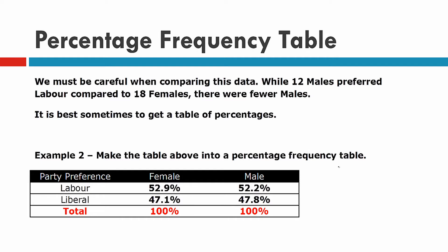Here we're going to convert it to a percentage table, and we're aiming for 52.9%. Looking at females, there were 18 females who preferred Labour out of 34 females. To change something to a percentage, we multiply by 100, and when we do that we get 52.9%. We won't need to calculate the female Liberal separately because 100% is the total, so the other one would have to be 47.1%.